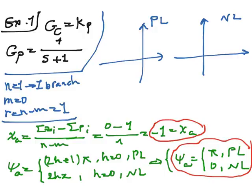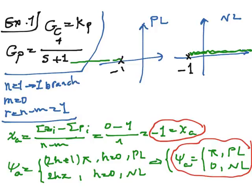Now we can draw the asymptotes — I will use green color for that. First, we need to determine the location of the poles and zeros of the open-loop system on our root locus. We have only one pole at minus 1. xa is equal to minus 1 and the angle of the asymptote is π for the positive locus, so we start from minus 1 and go towards negative infinity. For the negative locus, the asymptote starts at minus 1 and goes towards positive infinity with an angle of 0.